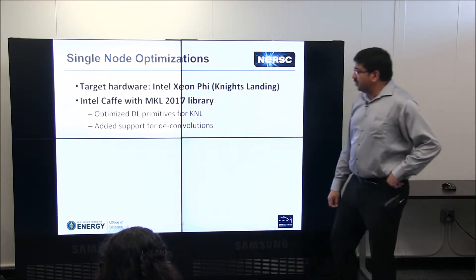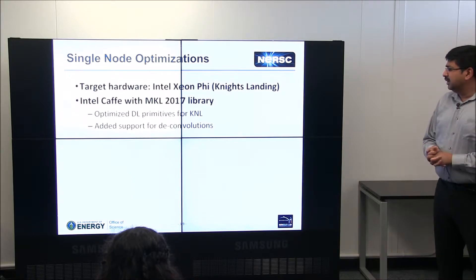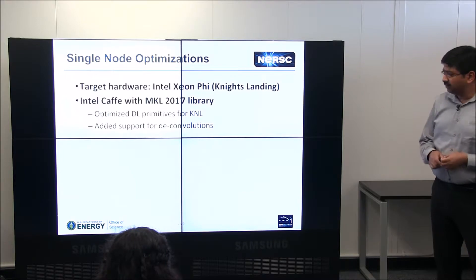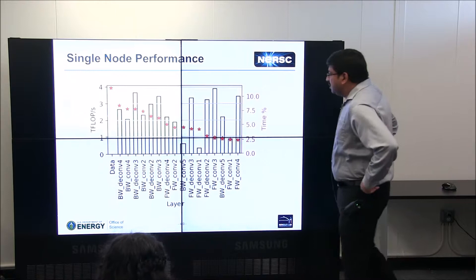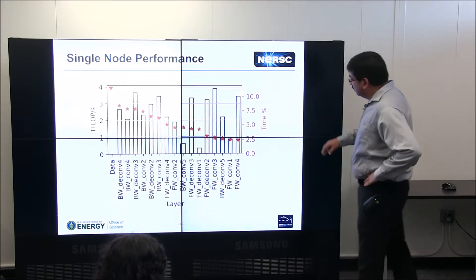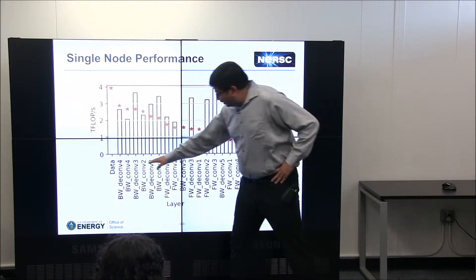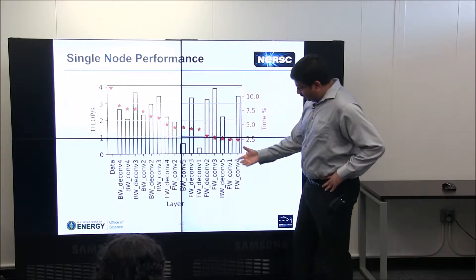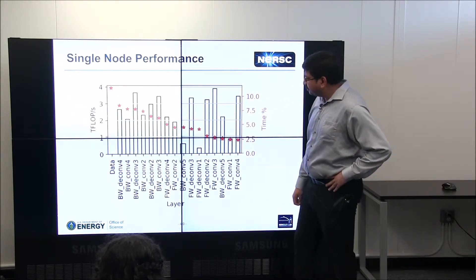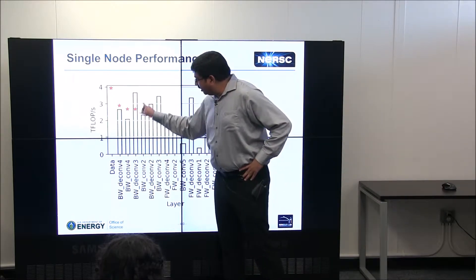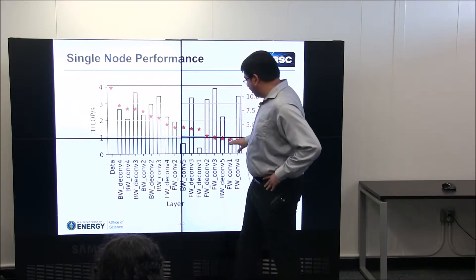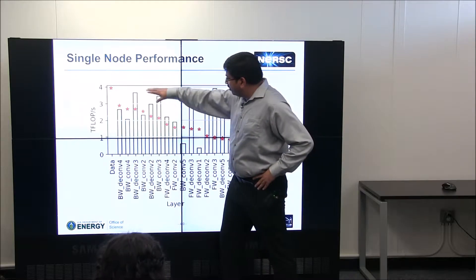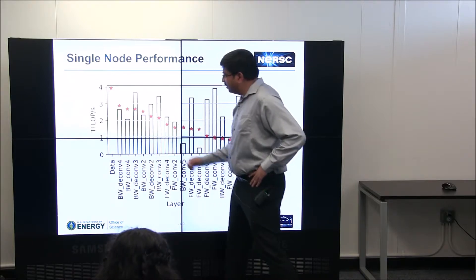There were several things we had to do to get this to work well. Some low-level deep learning primitives were not fully implemented in MKL, so we fixed those. On a single node, we can achieve one to four teraflops across different layers of the network — loading data, convolving, deconvolving. The bars in the chart show the teraflop level achieved, ranging from one to about three and a half teraflops.